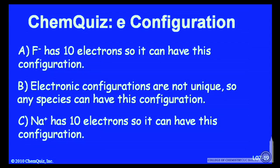Let's look at possible arguments for each of the answers. A, fluorine minus has 10 electrons, so it could have this electronic configuration. Or B, electronic configurations aren't unique, so any of those species could have that electronic configuration. Or C, sodium plus has 10 electrons, so it can have this electronic configuration.